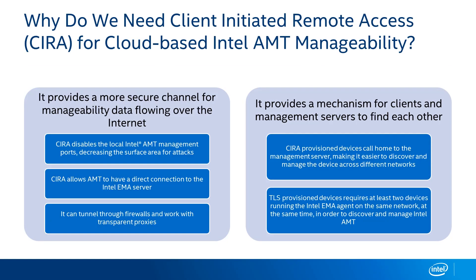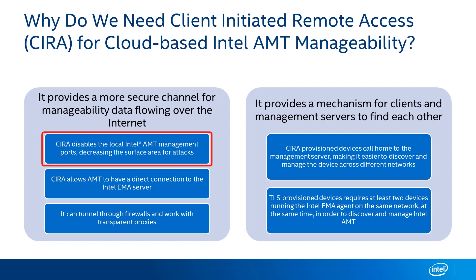In the previous slide I talked about client-initiated remote access, or CIRA, and I want to talk about why it's important for hardware-level manageability with Intel Active Management Technology when using a cloud-based EMA instance. First, it provides a secure channel for managing data flowing over the internet. We use a mutual TLS encrypted communication channel where both sides validate the connection is authentic. Another key point is that in CIRA mode, the local management ports normally present in a TLS configuration on Intel AMT are shut off, so you don't have to worry about systems on diverse networks exposing management ports as an additional attack surface.